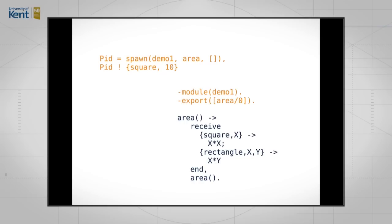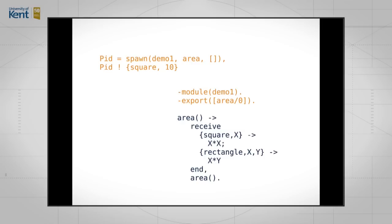If we say pid spawn demo one area, then we send it a square message. It receives that message, pattern matches it inside the receive statement, and then it computes x times x. It doesn't do anything with the result. So that's actually not a very interesting program. We won't see anything if we run that program. To make it slightly more interesting, we can add a print statement to the program. If we change that program a little bit, having received this message square of x, it can print out the value of x squared.